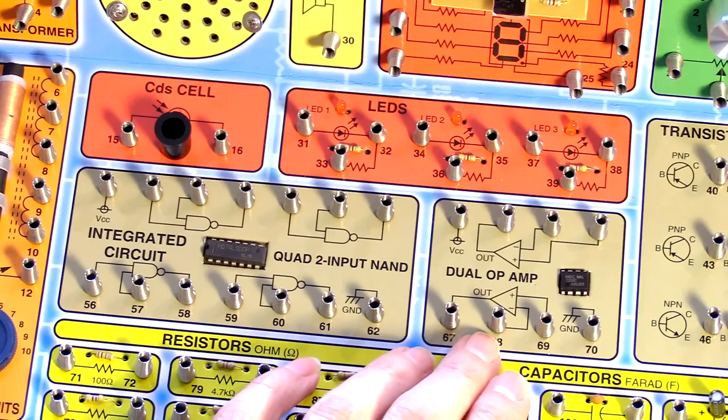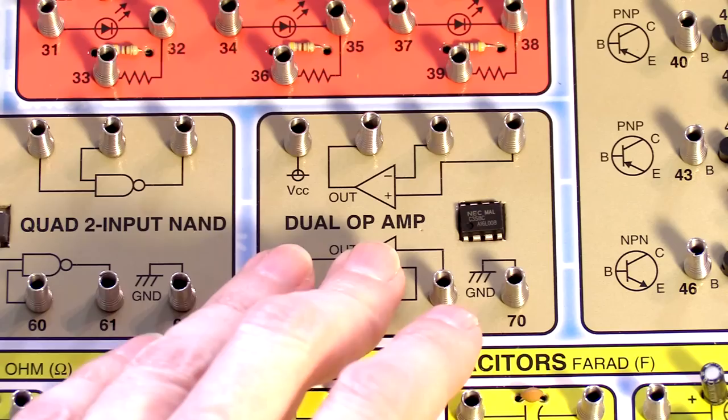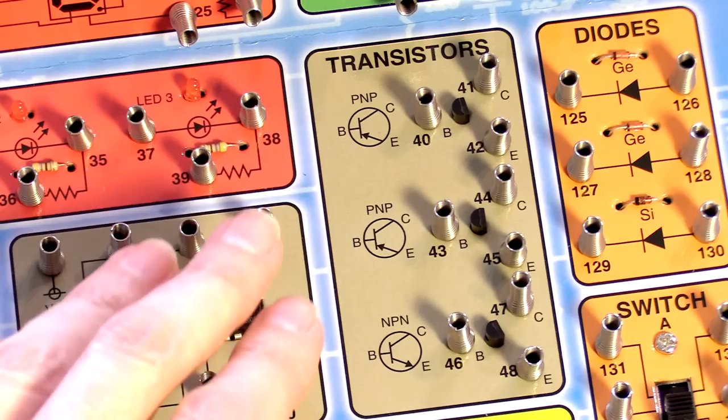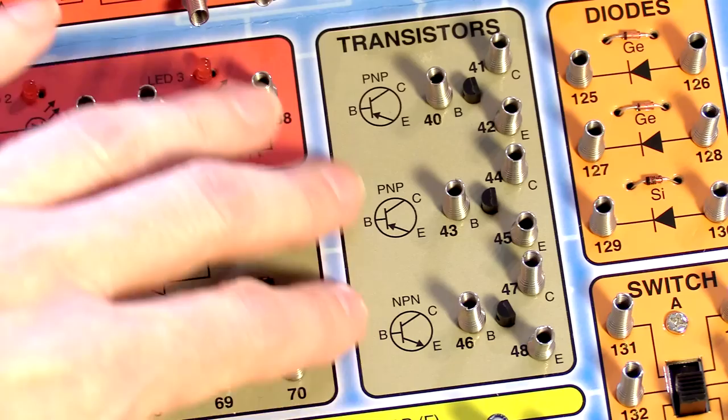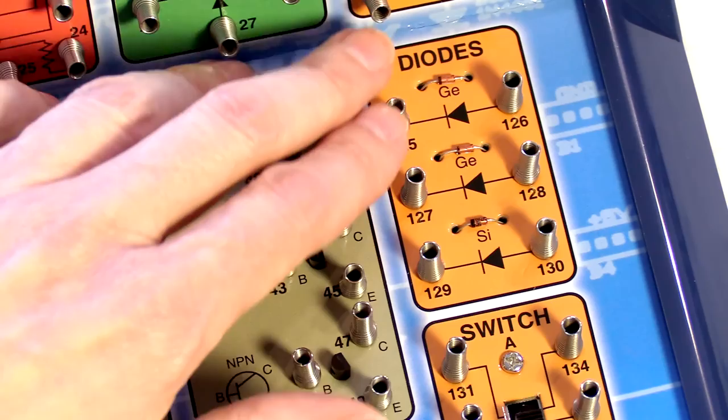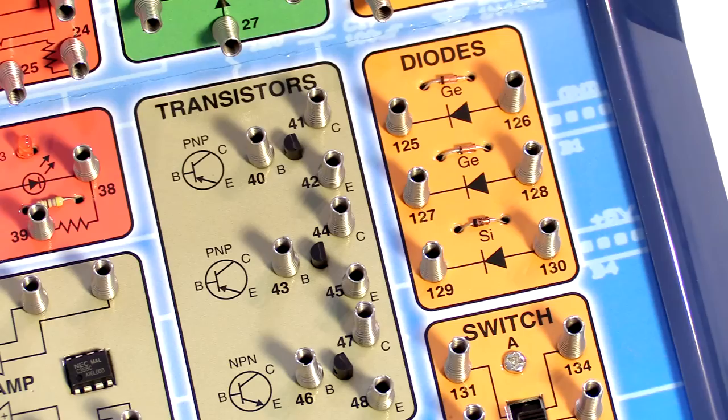And we've got a dual op-amp. This is a NEC C358C dual op-amp. We've got transistors. We've got two PNPs. They're all silicon. And one NPN. That's the same arrangement as the 150-in-1, although these are all silicon in TO-92 cases. We've got some diodes. Again, two germanium diodes and one silicon. And again, just like the 150-in-1.